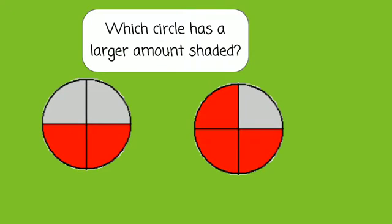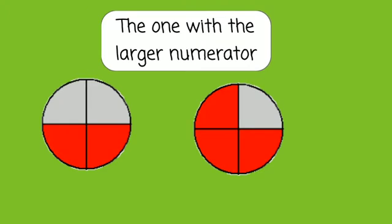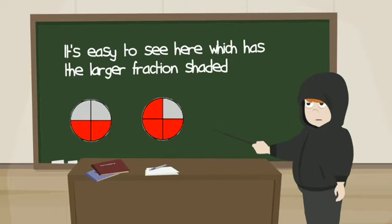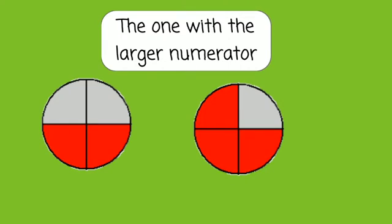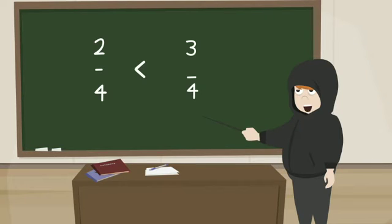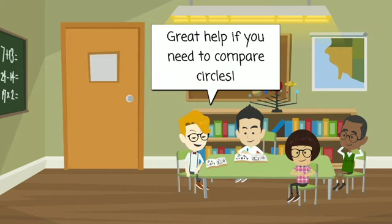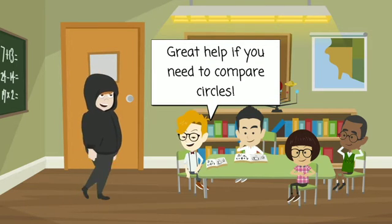Which circle has a larger amount shaded? The one with a larger numerator. It's easy to see here which has the larger fraction shaded? The one with a larger numerator. 2 fourths is less than 3 fourths. Great help if you need to compare circles.